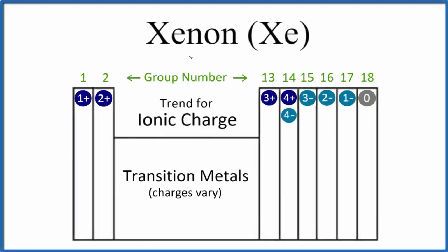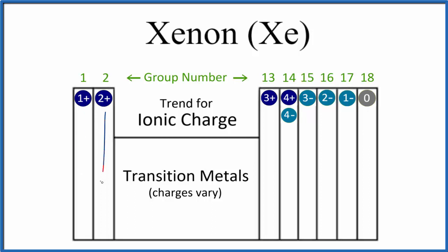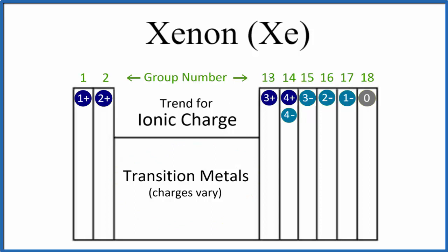In this video, we'll look at the charge for xenon (Xe). We're talking about finding the ionic charge for xenon. We have the periodic table here with the general trend for ionic charge — these are the charges when elements form ionic bonds. Group 1 is 1+, group 2 is 2+, skip the transition metals, group 13 is 3+, and so on.